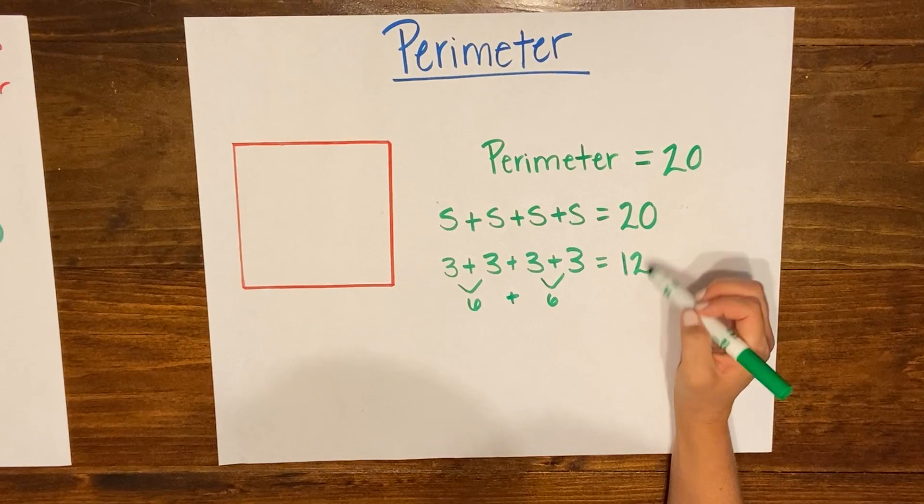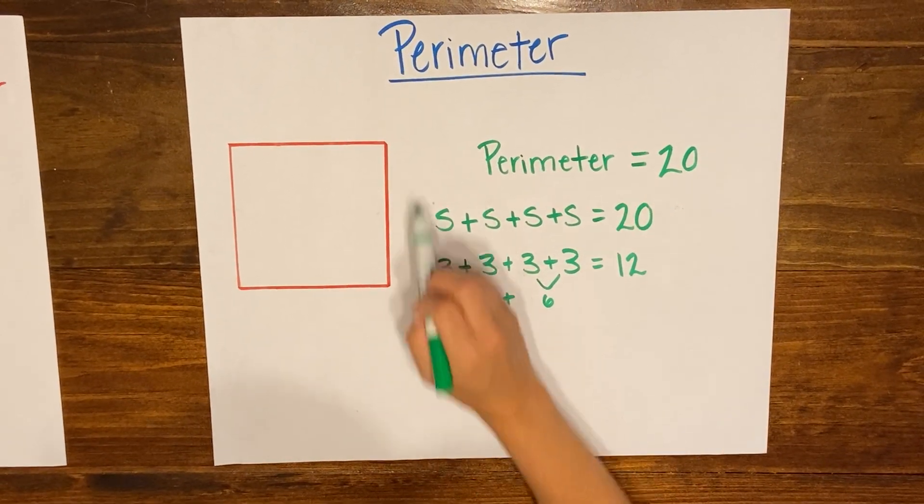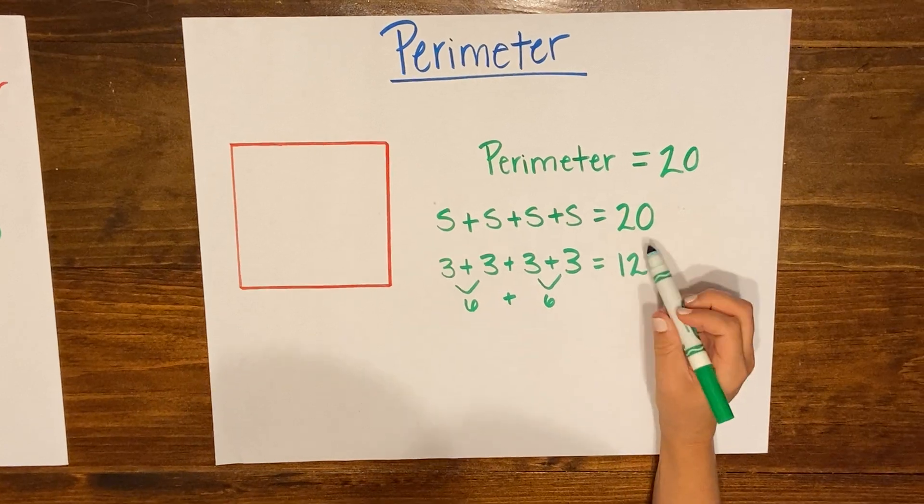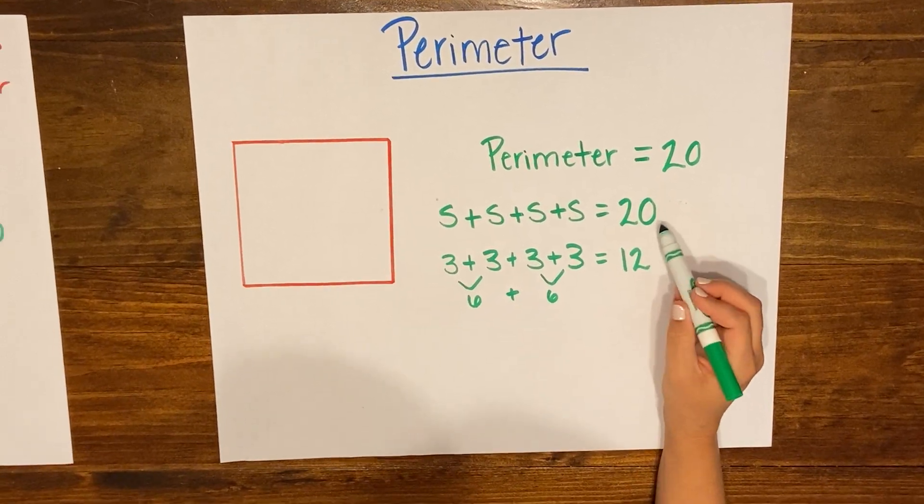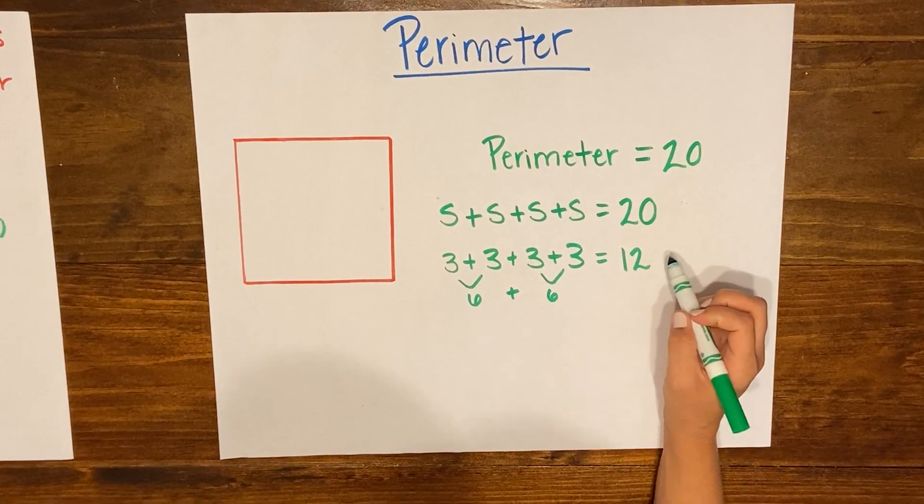Okay well 12 is not 20 so those are not equal which means 3 can't be the length of my sides, and 12 is still about 8 away from 20 so I'm not gonna do 4 because I'm thinking that might not be big enough. I'm gonna go ahead and try 5.